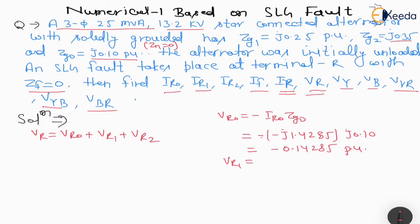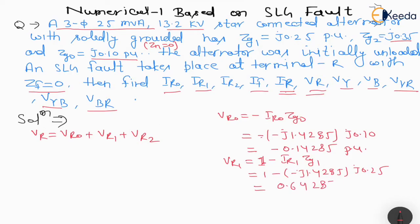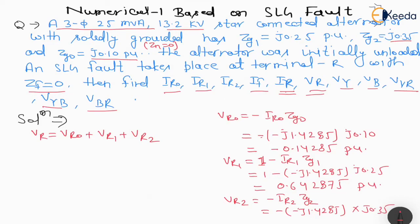The value of Vr1 = 1 - IR1 × Zg1. Here 1∠0° is Er in per unit. So Vr1 = 1 - (-J1.4285) × J0.25 = 0.642875 per unit. Now Vr2 = -IR2 × Zg2 = -(-J1.4285) × J0.35 = -0.499 per unit.